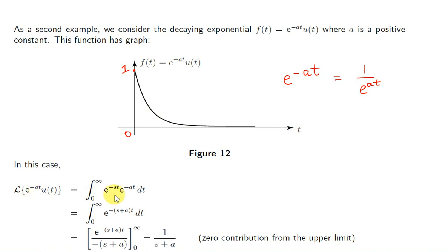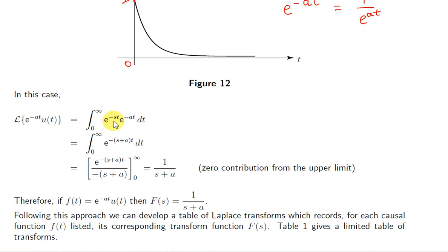We apply the definition of the Laplace transform. We have to multiply e to the minus st by the function, that is, by e to the minus at. u(t) is left out; we don't need it. We then integrate with respect to t from 0 to infinity. Multiplying these terms, we just add the powers — t has been factored out. So it's a straightforward integral of e to the power of a constant times t, and we divide by the constant, which is minus s plus a.